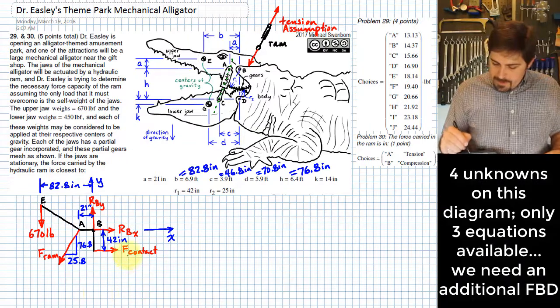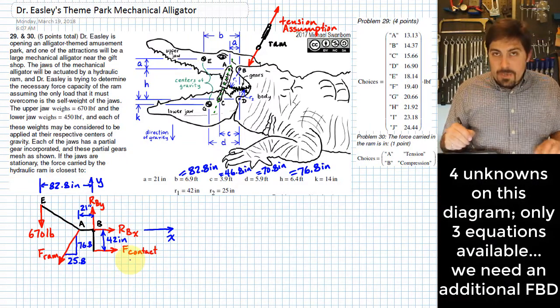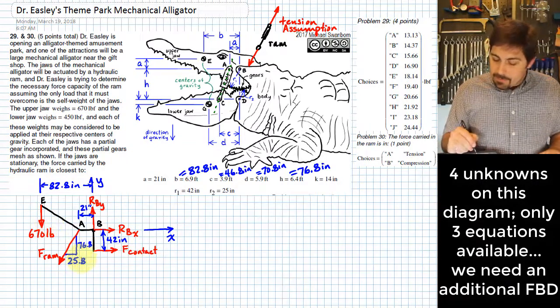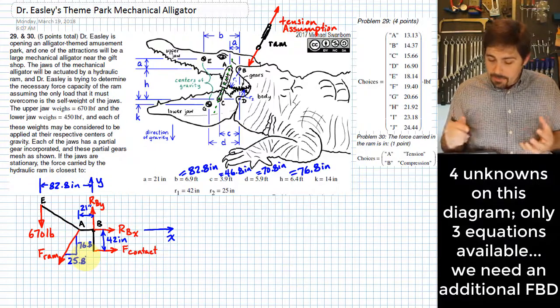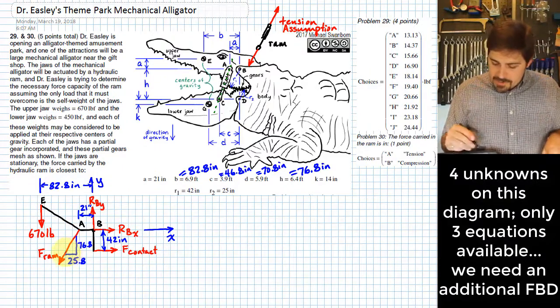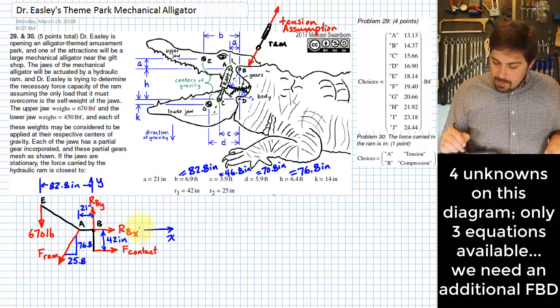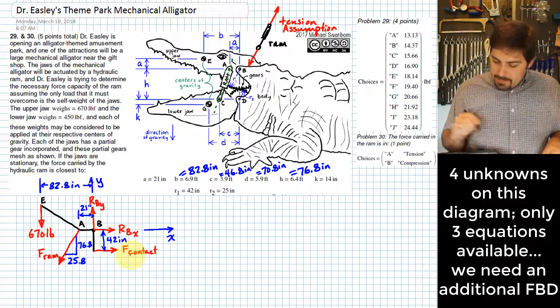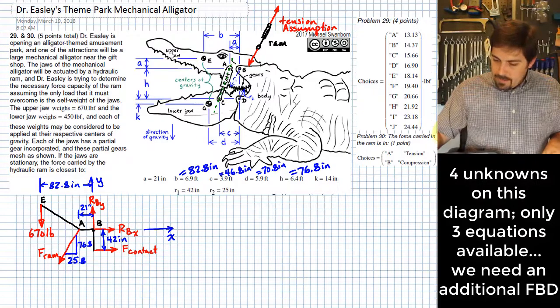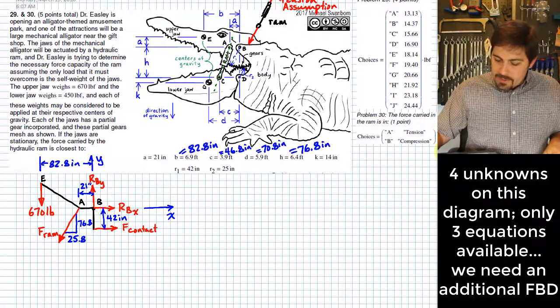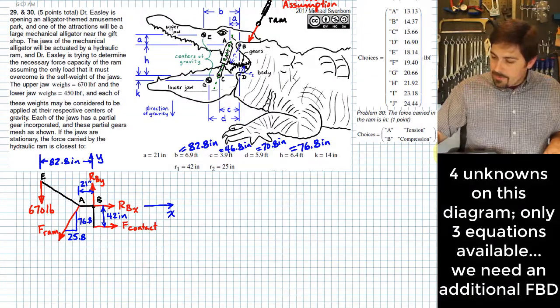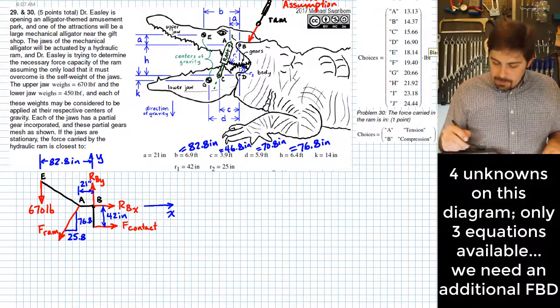If you look at this, we have too many unknowns on this free body diagram to be able to solve it, because this is a non-concurrent force system. We have up to three equations, and I have four things that I don't know. FRAM, RBY, RBX, and F-contact. So let me go ahead and recognize that I need to draw another free body diagram, this time of the lower jaw.